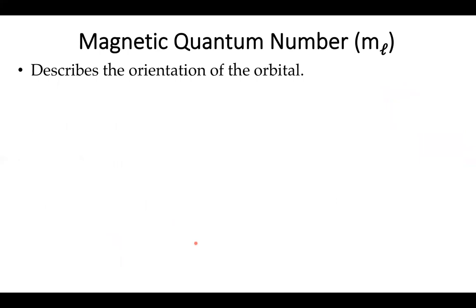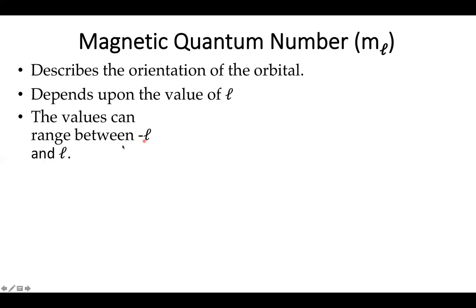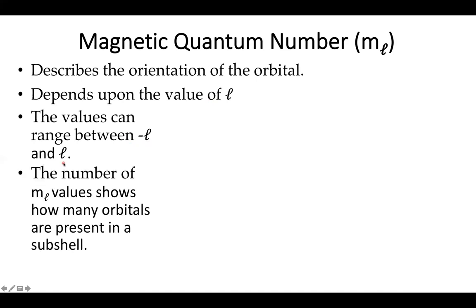One of the other key features of l and this orbital angular momentum is it also informs our third quantum number, the magnetic quantum number, which describes the orientation of the orbital. l tells me how many different directions the orbital faces, m sub l tells me which directions it faces. It can have values in between negative l and l. The number of m sub l shows us how many orbitals are present in any given subshell.